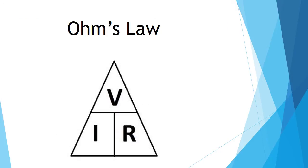There's a direct relation between all three of those things, and that is determined with Ohm's Law. It's very important if you are doing anything with electricity. If you have two of the measurements, you can find the third one, and you can use this little triangle chart to do it. For example, if we're looking for voltage, we simply take our current, which is I, and we multiply it by our resistance, and that gives us our voltage.